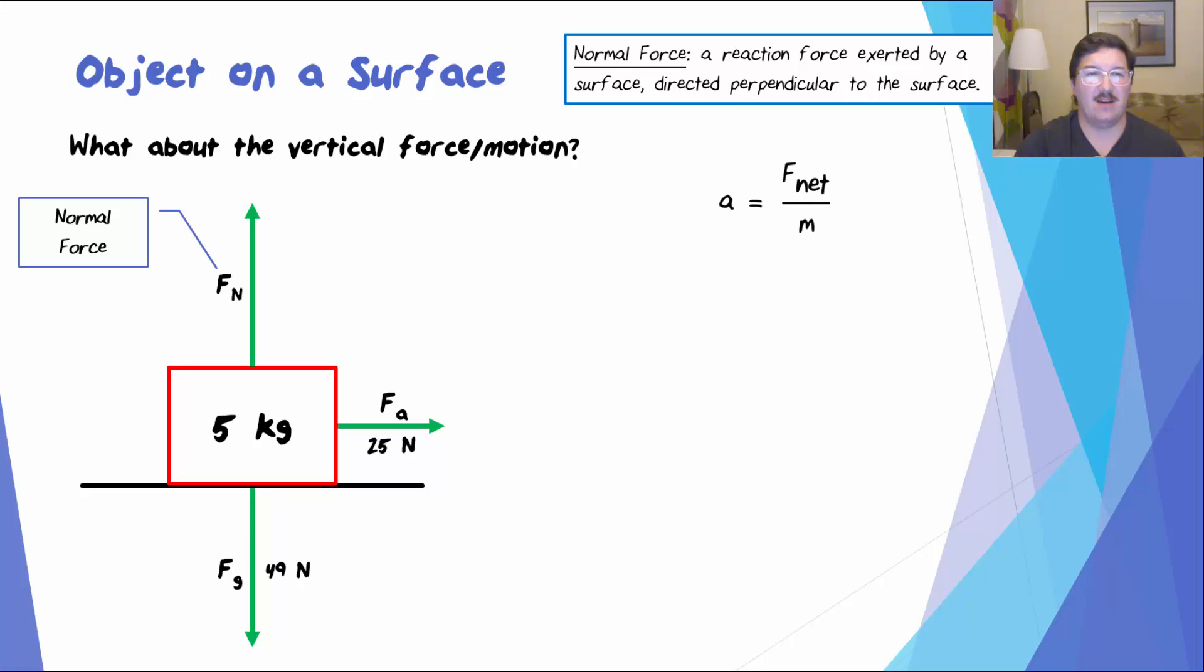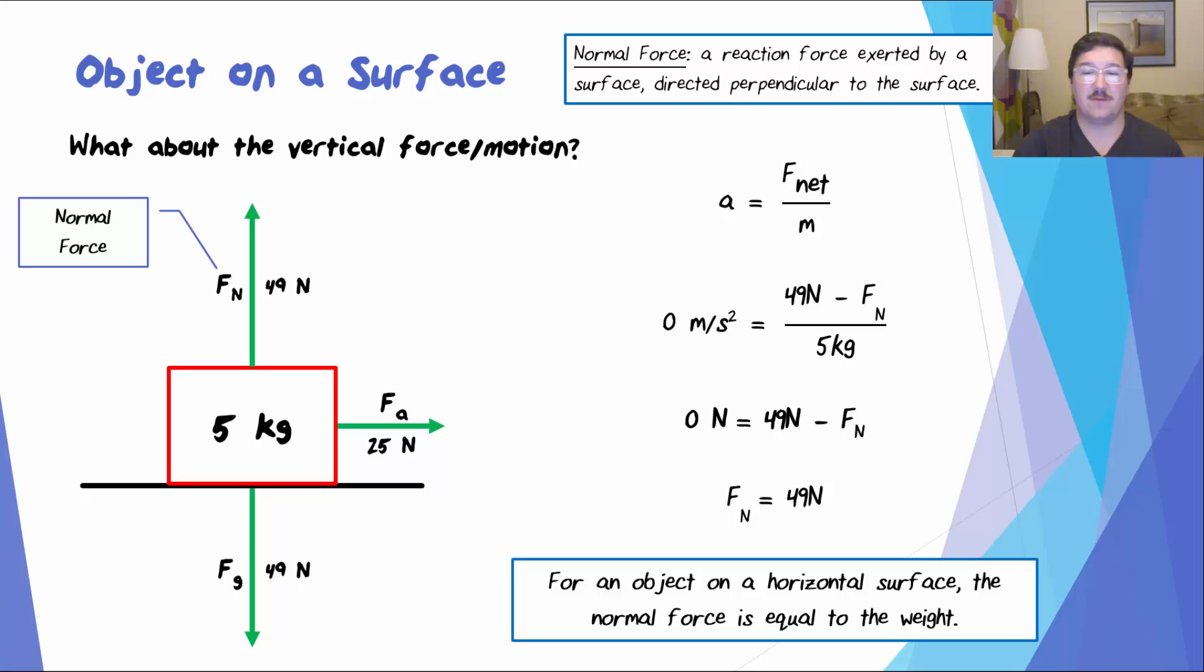Let's look at Newton's second law again with the normal force in mind. We know that this object is still not accelerating up or down. So we can still plug in zero for the acceleration. If we cross multiply and then solve for Fn, we find that the normal force in this case is equal to 49 newtons, just like the weight. That's not a coincidence. Again, Newton's third law should tell us that the forces between the crate and the surface are equal in magnitude, in this case 49 newtons, but directed in opposite directions. For any object on a horizontal surface, the normal force is going to be equal to the weight.